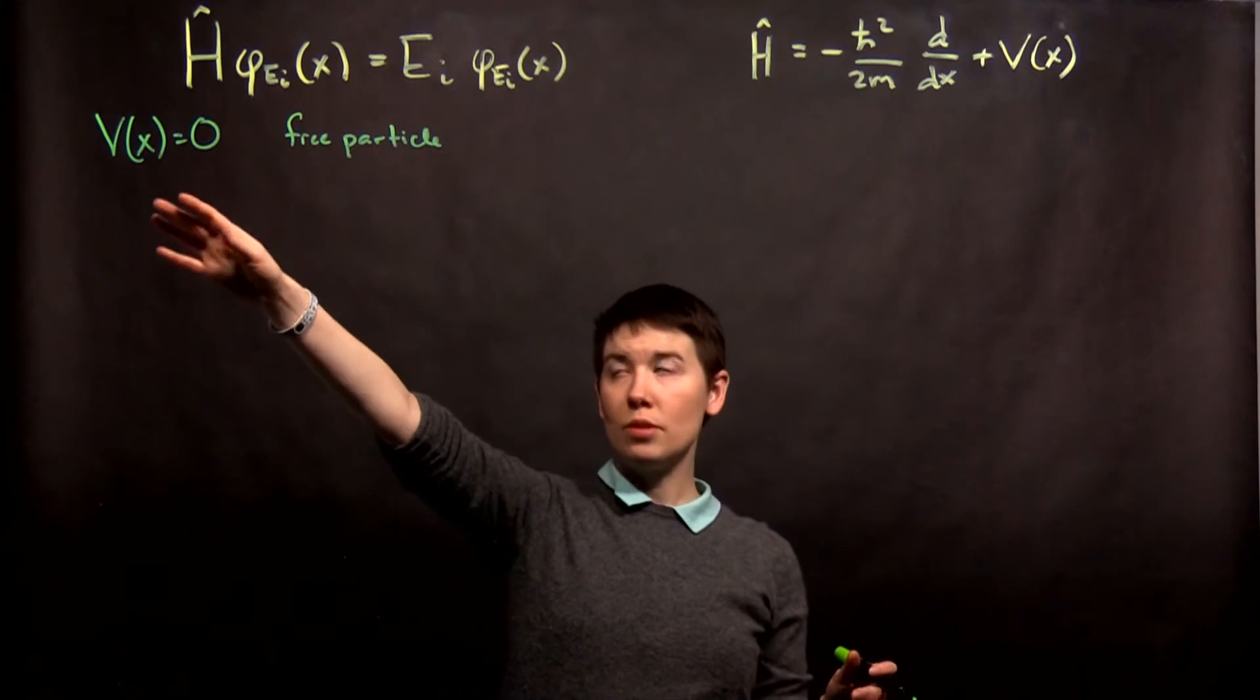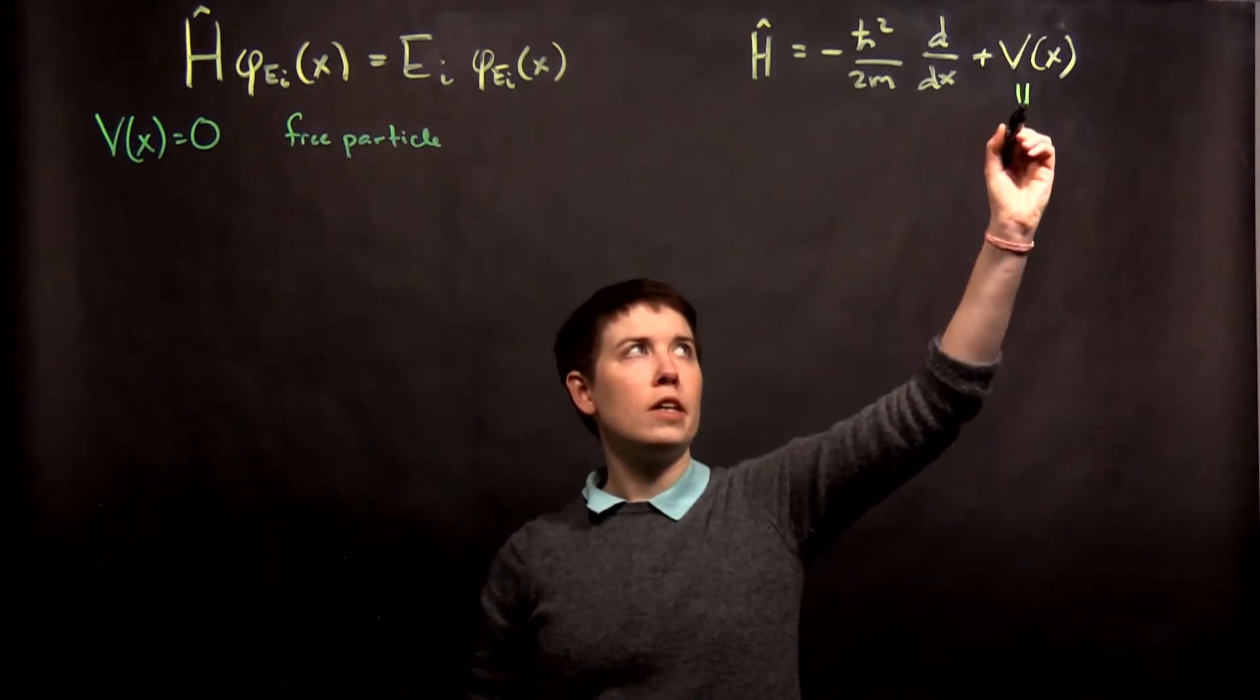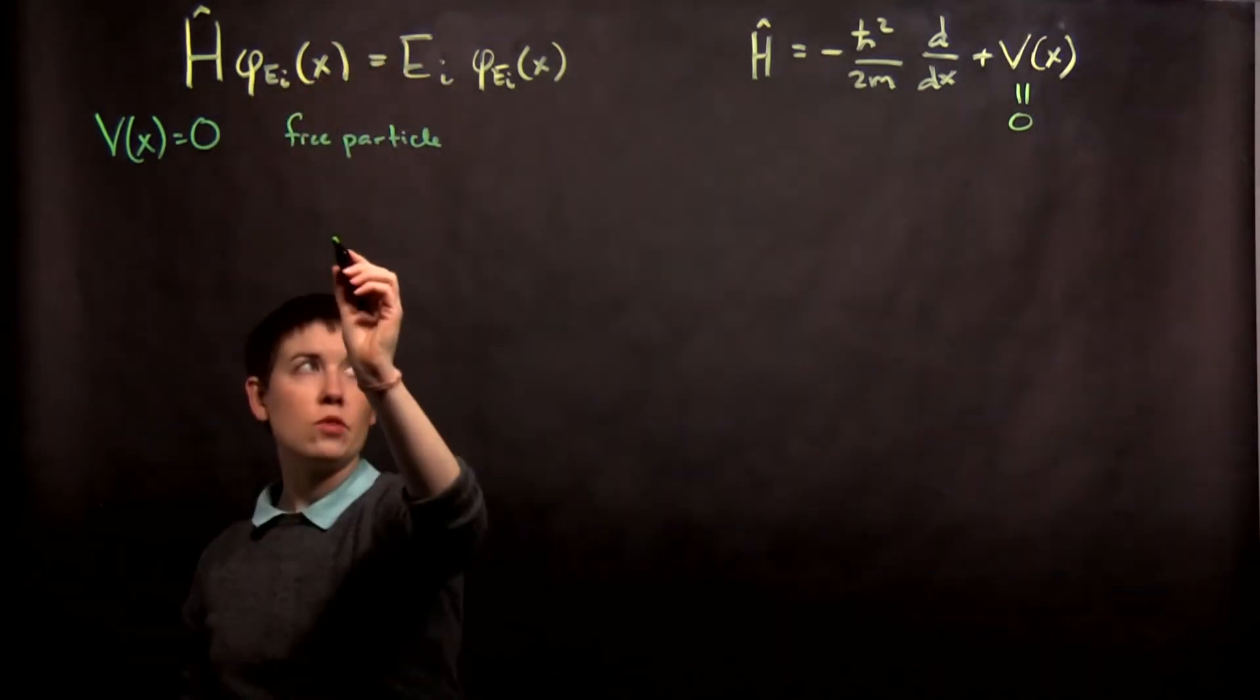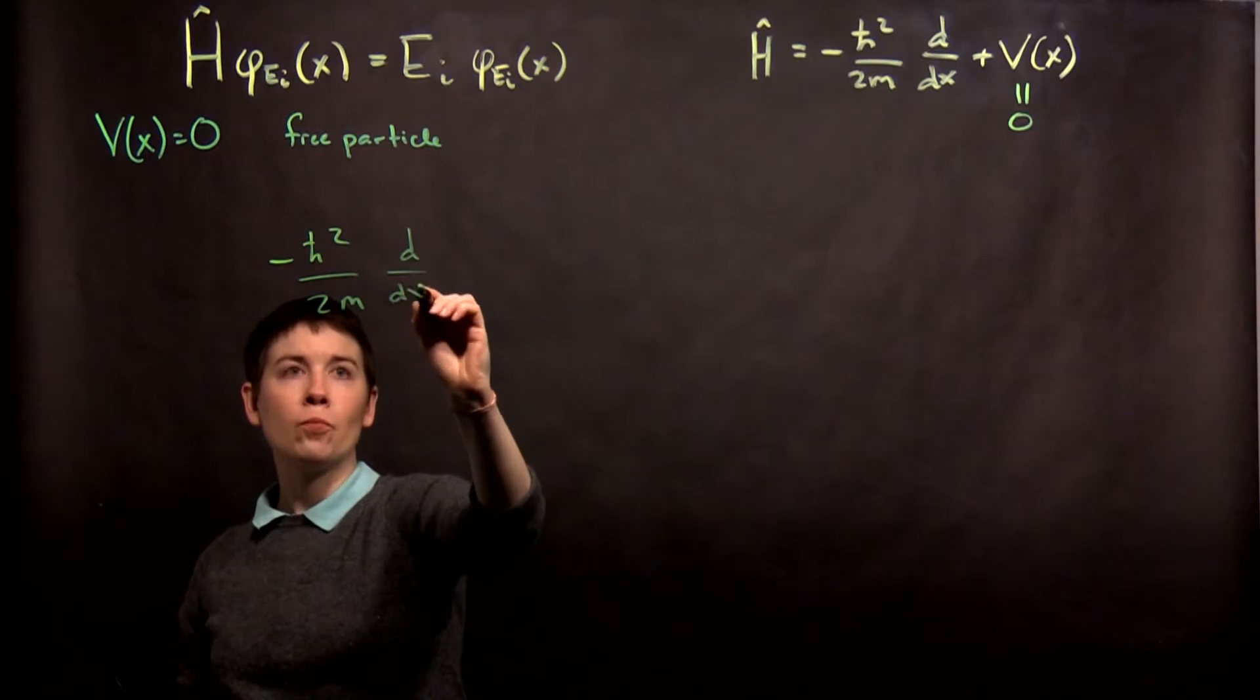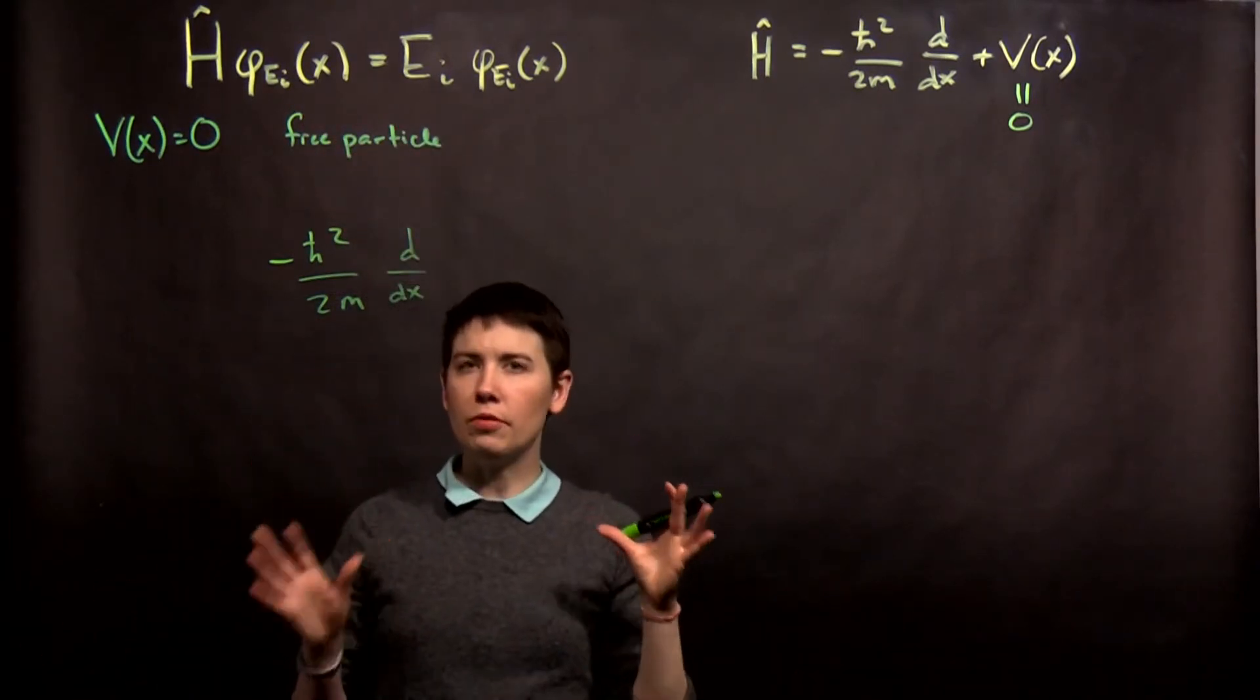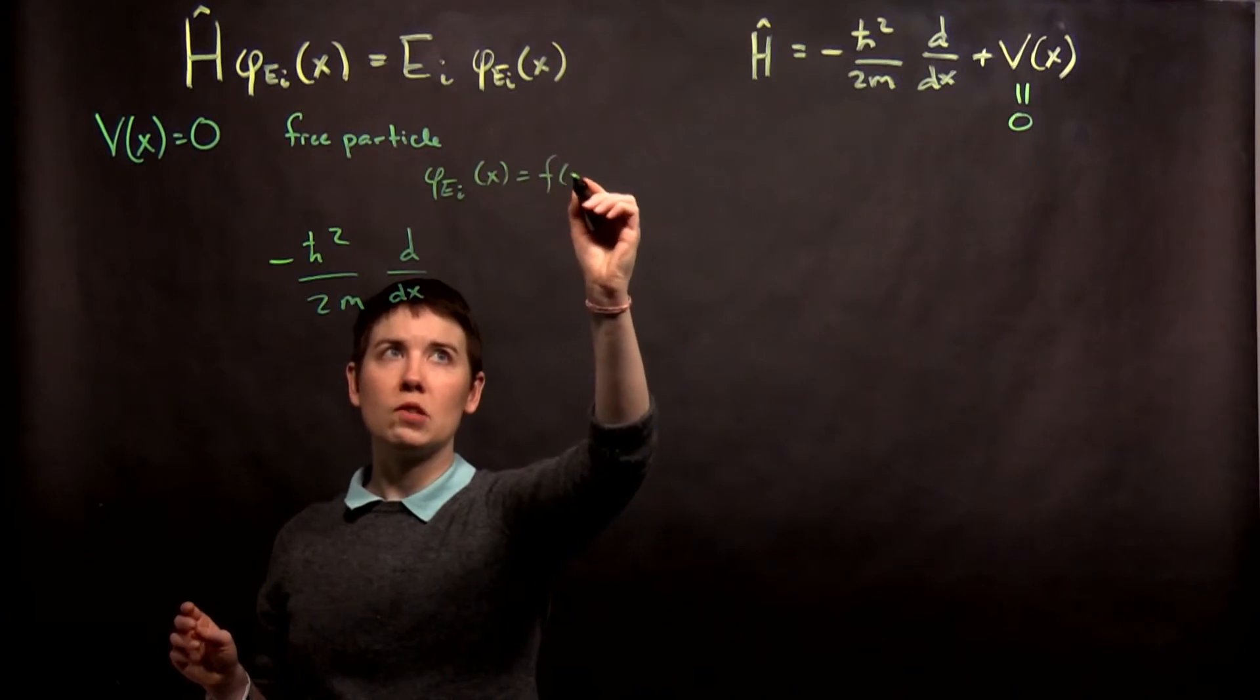So now that we have a specific version we can plug that in. So now that's just going to set V(x) equals zero. So now I'm going to take this version and I'm going to rewrite it. So I have negative h bar squared over 2m d²/dx² of my functions. And to try to just simplify this a little bit I'm going to write that this special wave function I'm looking for it's just f(x).